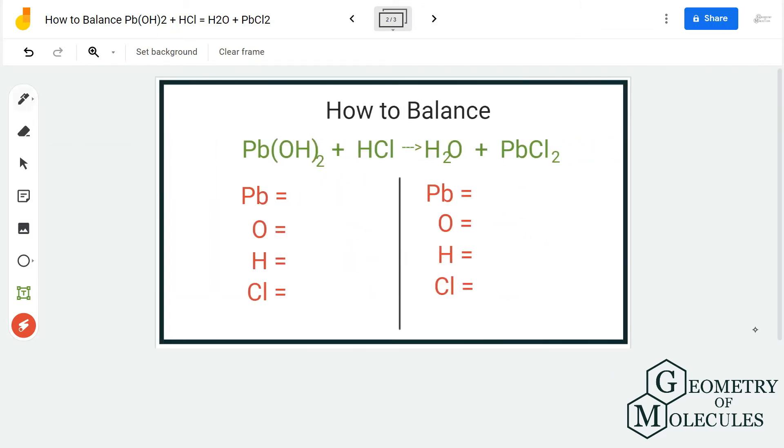So to start balancing the equation we are going to first check the number of atoms on both reactant and product side.